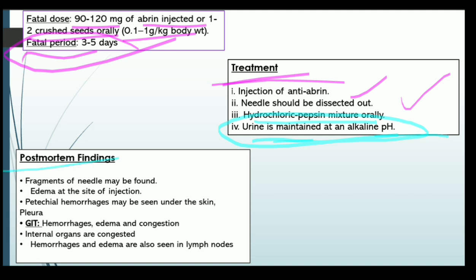Some common post-mortem findings: if the poison was given via injection, a needle must be present. Edema is observed at the site of injection. Petechial hemorrhage can be seen under the skin, and the gastrointestinal tract may show edema, congestion, or hemorrhages. Internal organs could also be congested, along with hemorrhage and edema of the lymph nodes.